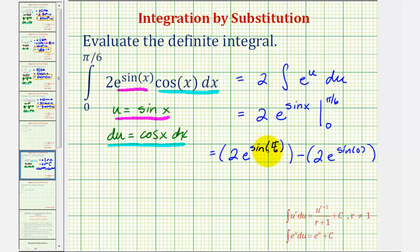Well, sine pi over six is equal to one-half, so we have two e to the one-half. Sine zero is zero, and e to the zero is one, so we have minus two.